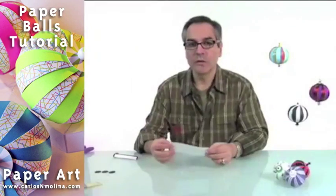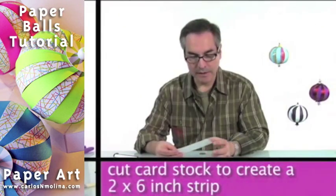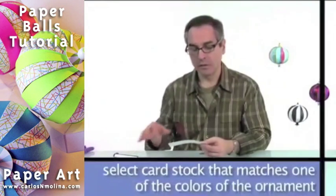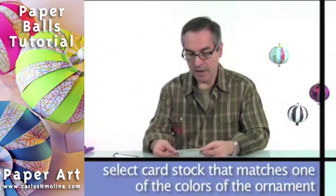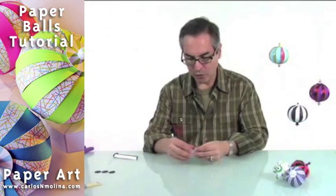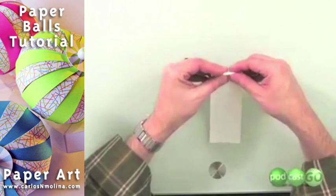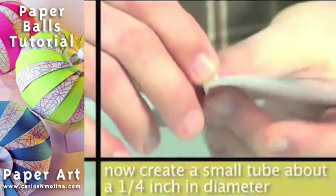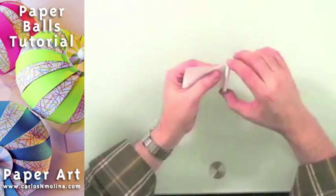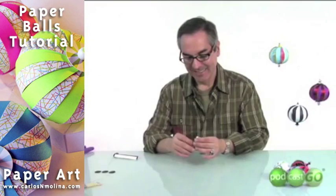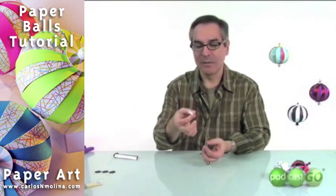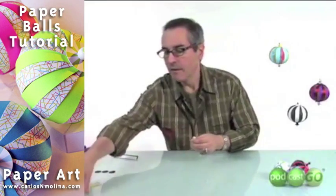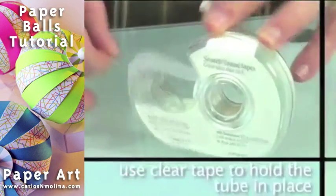You will also need a strip of paper that is two by six. I usually select paper that matches one of the colors from my ornament. Using this strip of paper, you're going to make a little tube that will be about a little more than a quarter of an inch wide. With the tape, you're just going to tape it.